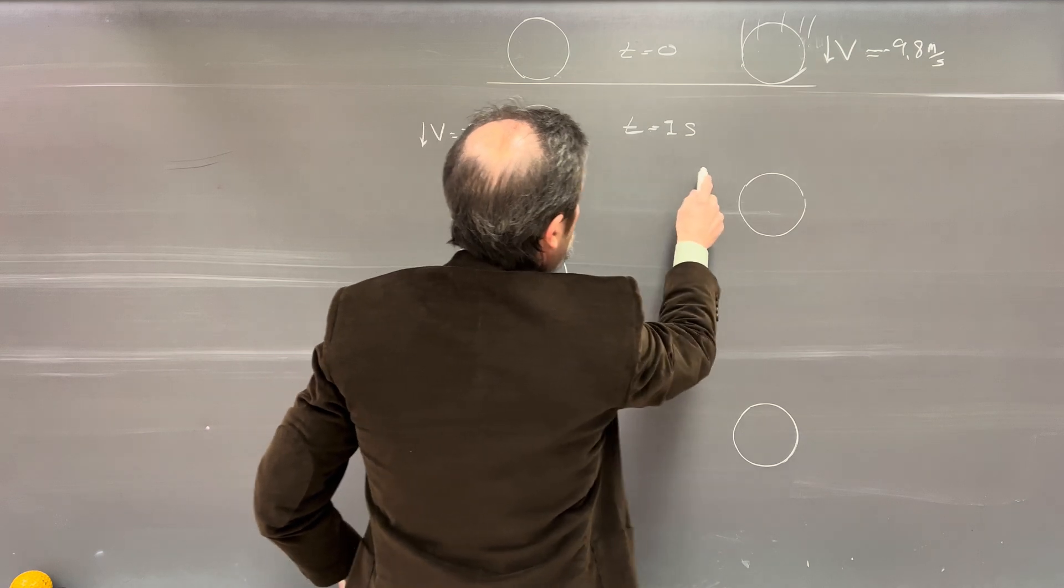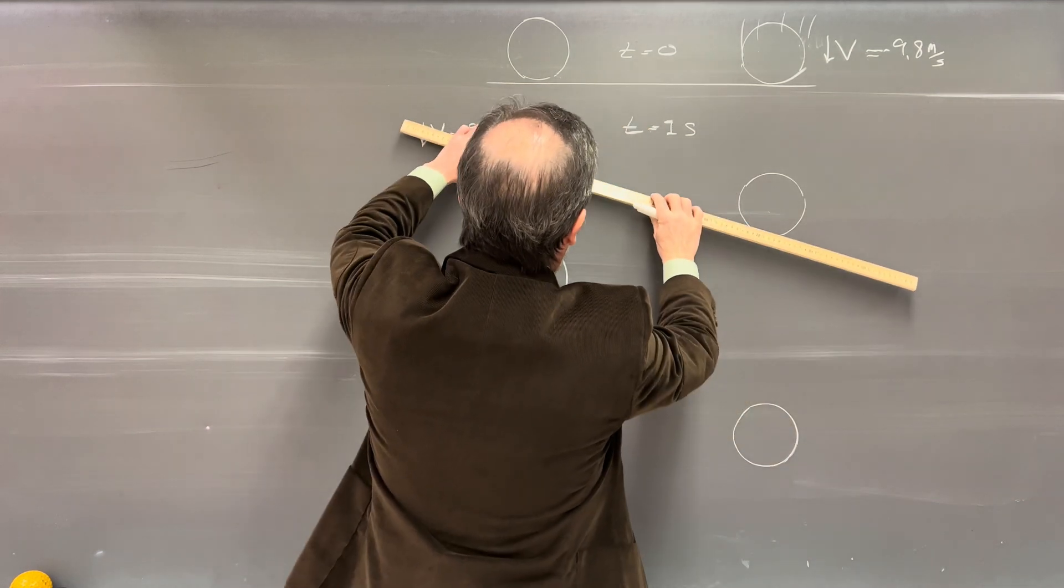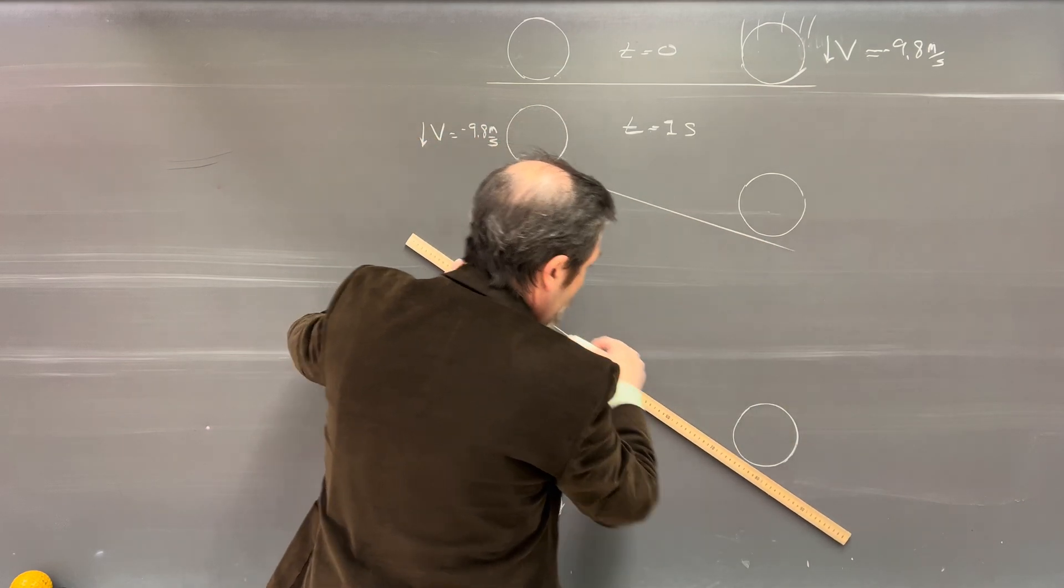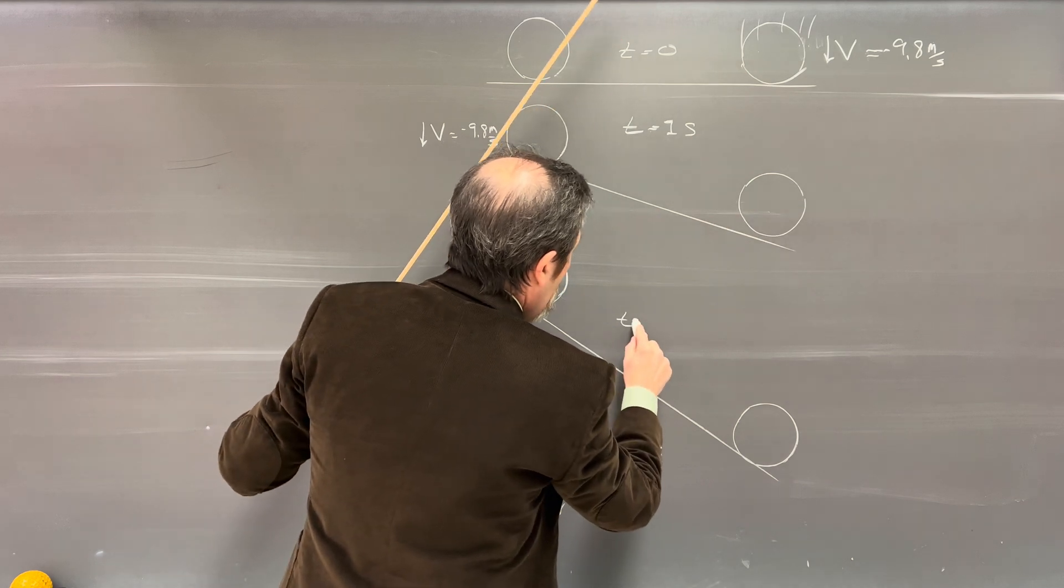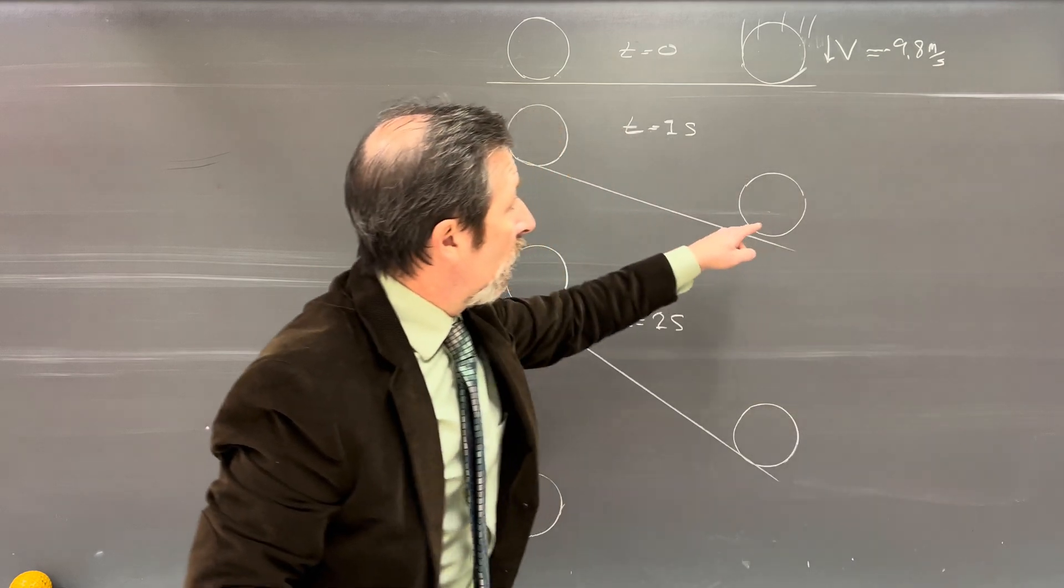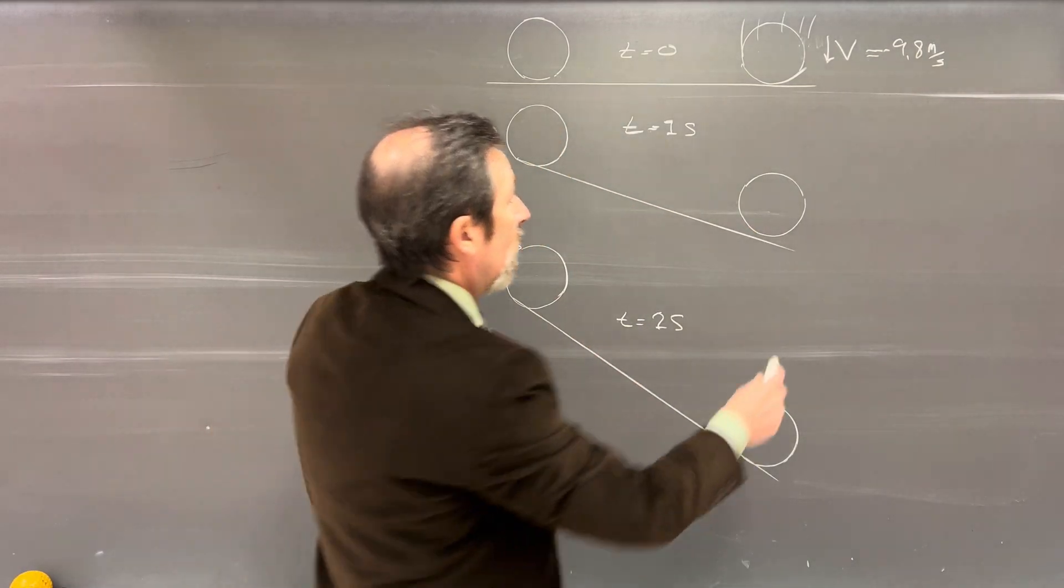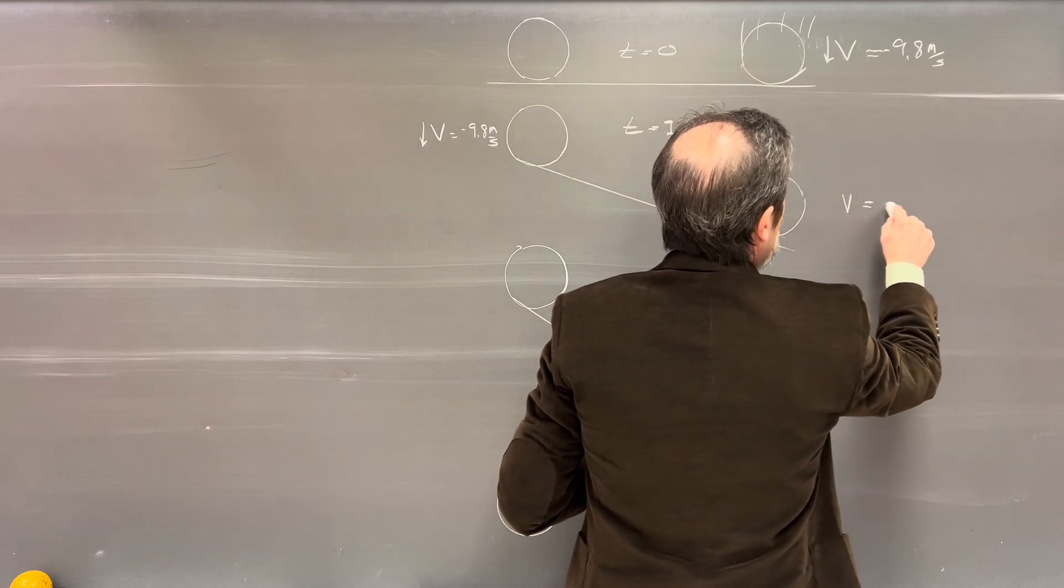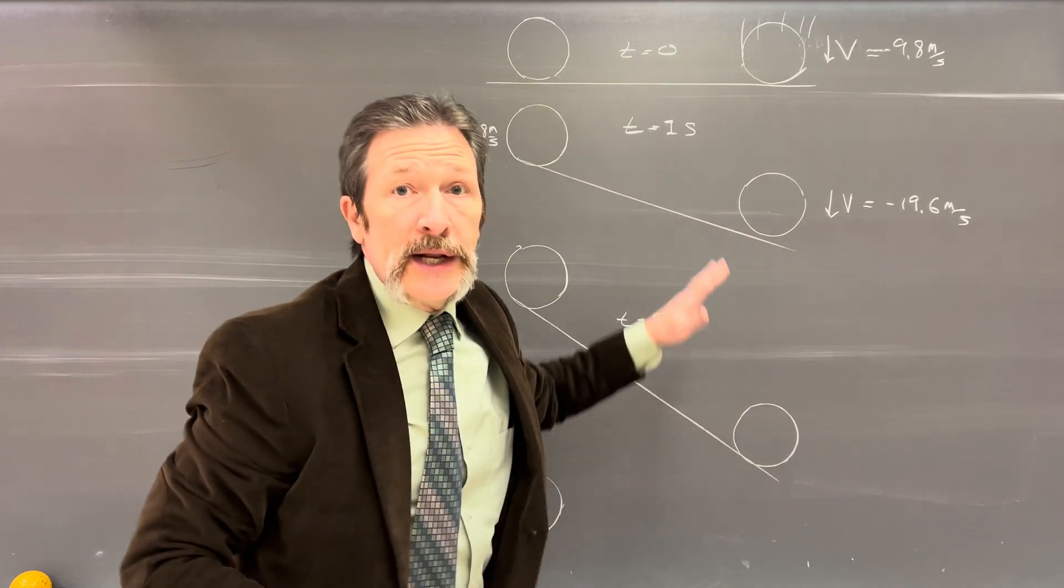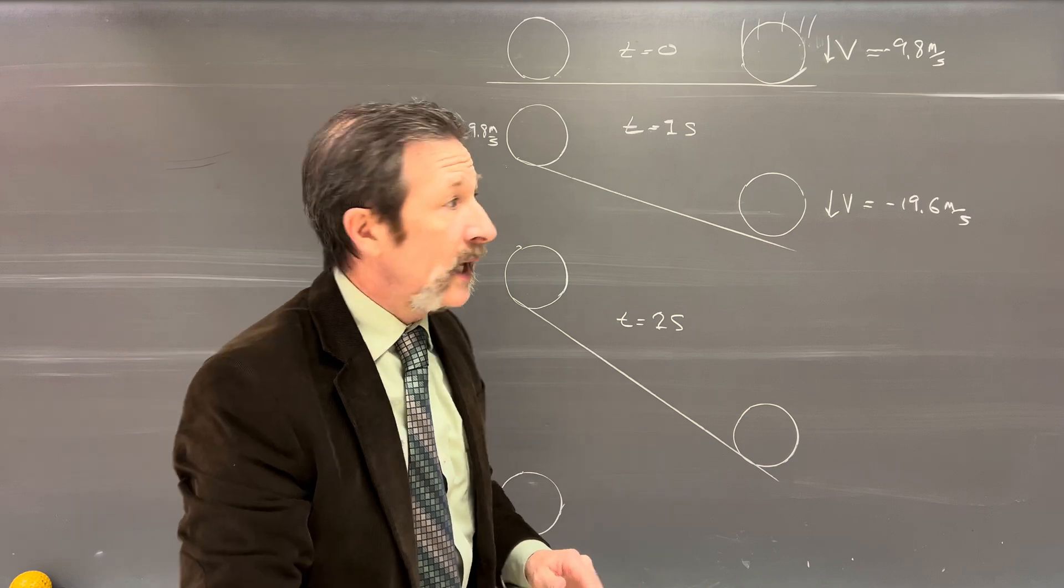So this would be at one second here. This would be at about the one second mark for these two. And this would be the two second mark. So I could say time equals two seconds. You can see that the ball that was already in motion will always have a greater velocity and I can say this one is going to be a velocity negative 19.6 meters per second down. It'll always be going faster and it'll always be in front of the other one for any given second.